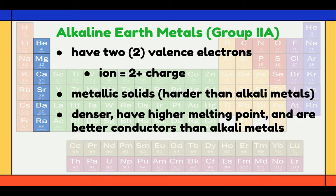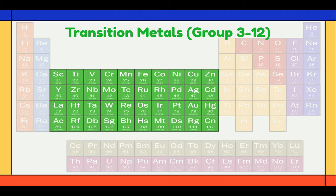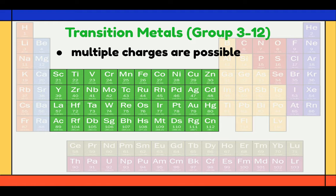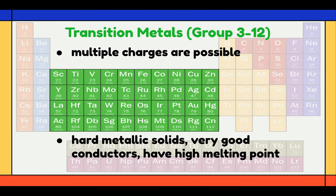Next, we have the transition metals, from groups 3 to 12. The number of electrons that these elements can lose varies, meaning that multiple charges are possible. They are hard metallic solids which are very good conductors and have high melting points. They are also shiny, dense, and lustrous.